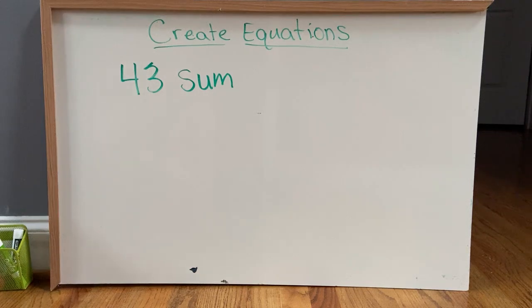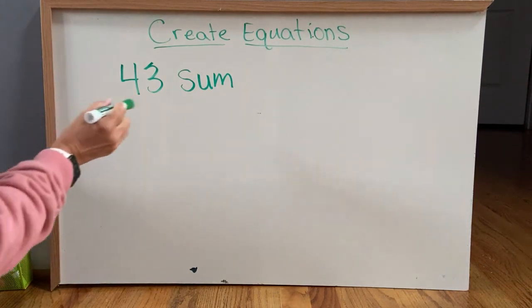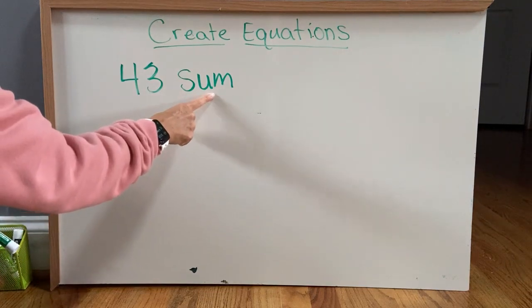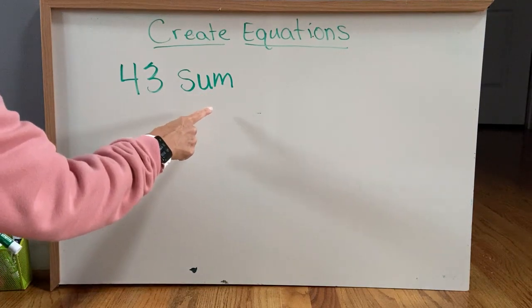Let's talk about how to create equations with a given number for our sum or difference. So we're going to start with 43, and we want 43 to be our sum. The sum is the answer to an addition problem.